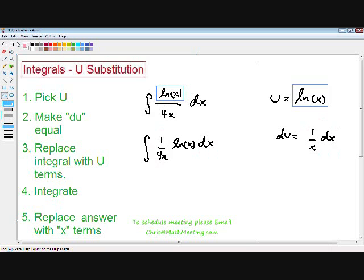So let's move on to step number 2. Let's make our du equal to what's inside the integral. As you can see we have a 1 over 4x dx inside our integral and we have a 1 over x dx in our du. So in order to solve that, I'm just going to multiply both sides of the equation by 1 over 4.